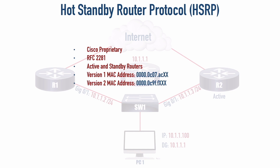Something that's not obvious is if R1 had been the active router and went down, and then came back up, you might expect that it would take back over the active role. But by default, it doesn't do that. Even if it has a higher priority — which is what determines who becomes the active router in the first place — it's not going to regain its previous role as the active router unless we enable a feature called preemption. With HSRP, preemption is disabled by default. The default hello time is three seconds and the default hold time is 10 seconds.